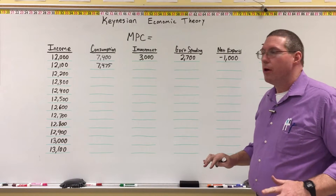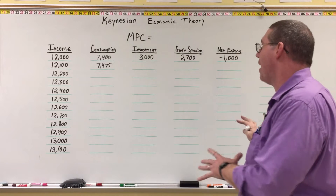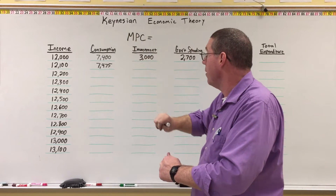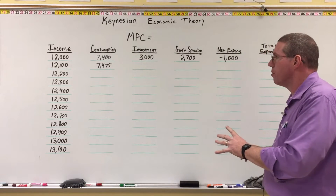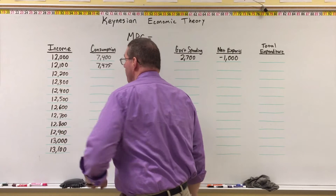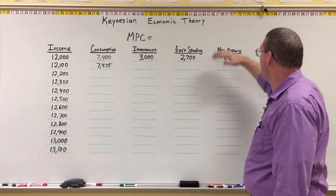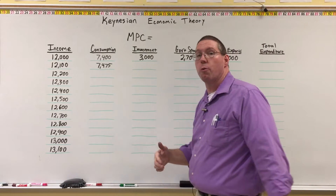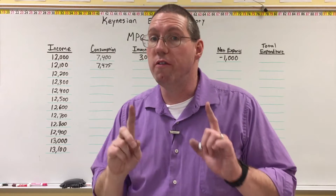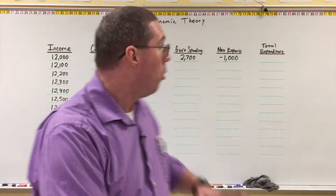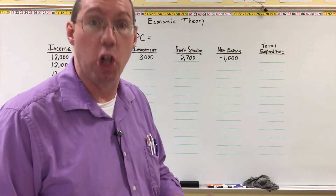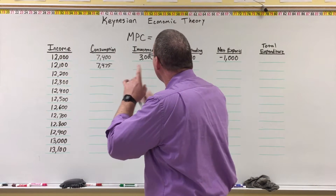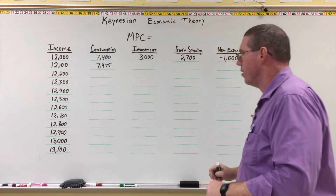We're going to use a table of values to get an understanding of the basics of Keynes's theory. The table has income in the first column, then consumption, investment, government spending, net exports, and total expenditures. We're going to fill this out and reveal some things you may have learned before and forgotten, and then look at the table to understand what Keynes was saying when he presented his theory.